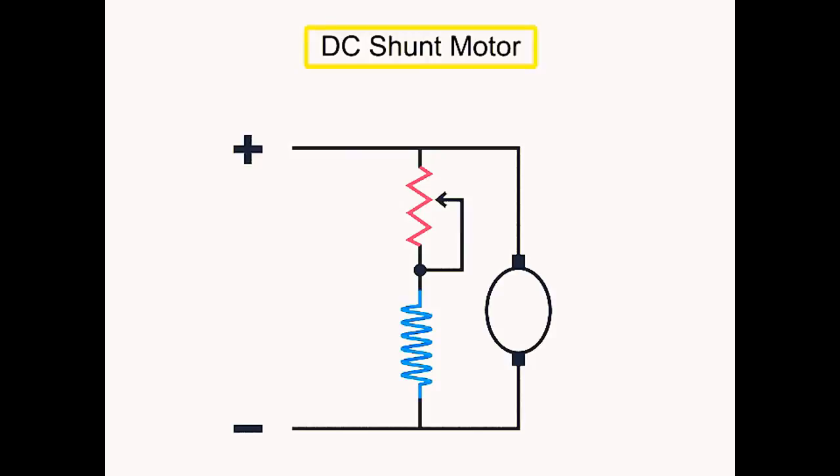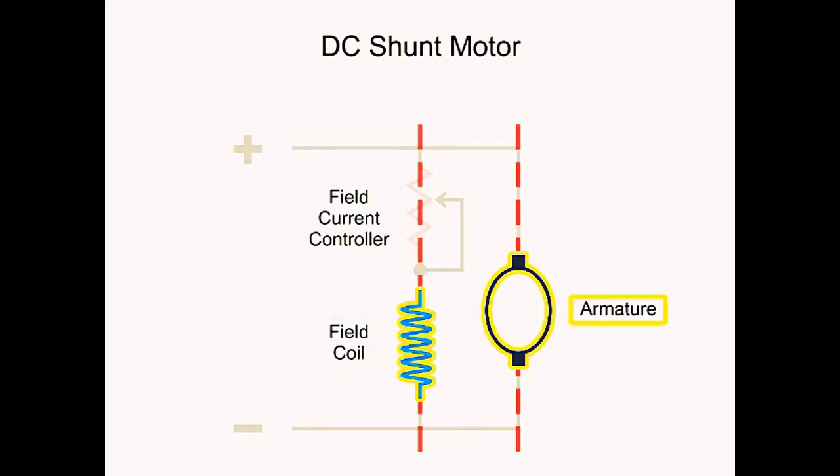A DC shunt motor is a DC motor that has the field coil connected in shunt or parallel with the armature.